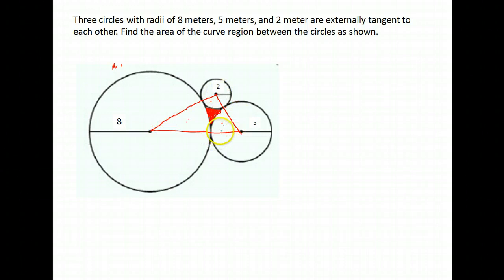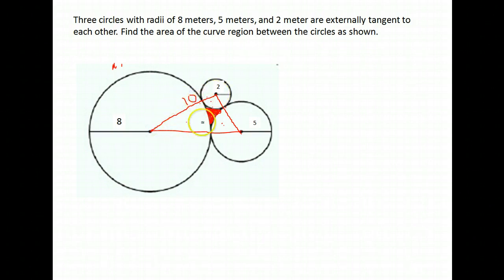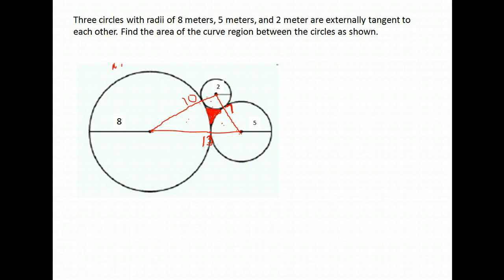To start that plan I need to know the lengths of the sides of my triangle. This circle had a radius of two, so from the center to the edge is two; this one had a radius of eight, so eight plus two gives me a length of ten for this side. Next, radius two plus five gives a side length of seven, and radius eight plus five gives a total of thirteen.